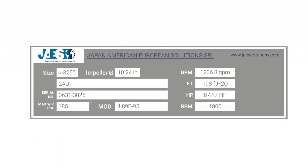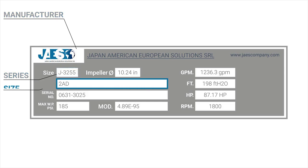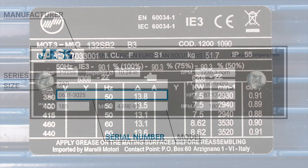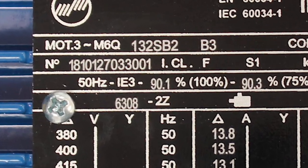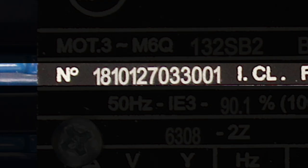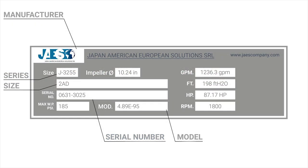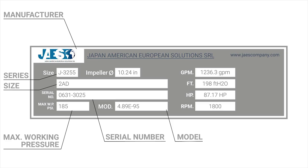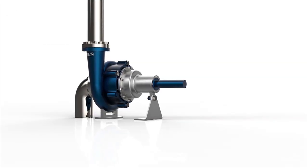Nameplates are used to designate the manufacturer, as well as to identify the product thanks to pump series, size, model, and serial number — which is a unique sequence of numbers and letters assigned incrementally or sequentially to the pump in order to uniquely identify it. Nameplates are also used to designate the properties of the product, such as the maximum working pressure value, as well as many others that we are going to see in a moment.